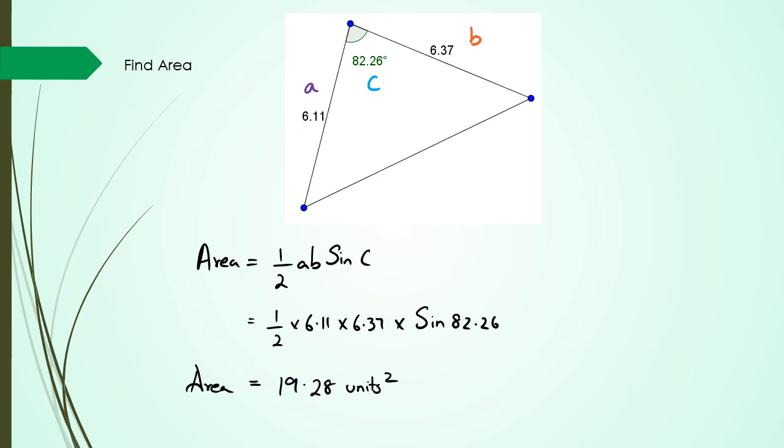Cool. So basically guys, that's how you find area given two sides and an included angle for a triangle. So if you have any questions, pop it in the comments below. And thank you for watching this.